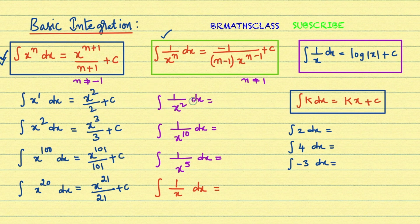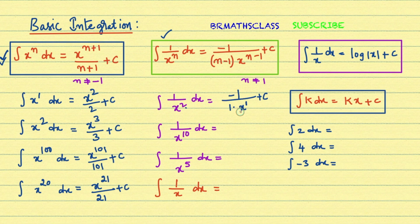Integral of 1 by x squared dx: applying the formula, minus 1 divided by n minus 1, where n minus 1 means 2 minus 1 equals 1, into x power 2 minus 1, which is x power 1, plus c. This simplifies to minus 1 by x plus c.